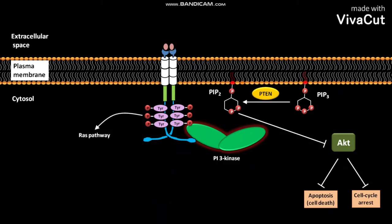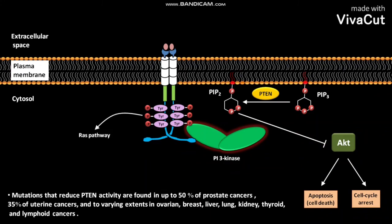Mutations that reduce PTEN activity are found in up to 50% of prostate cancers, 35% of uterine cancers, and to varying extents in ovarian, breast, liver, lung, kidney, thyroid, and lymphoid cancers.